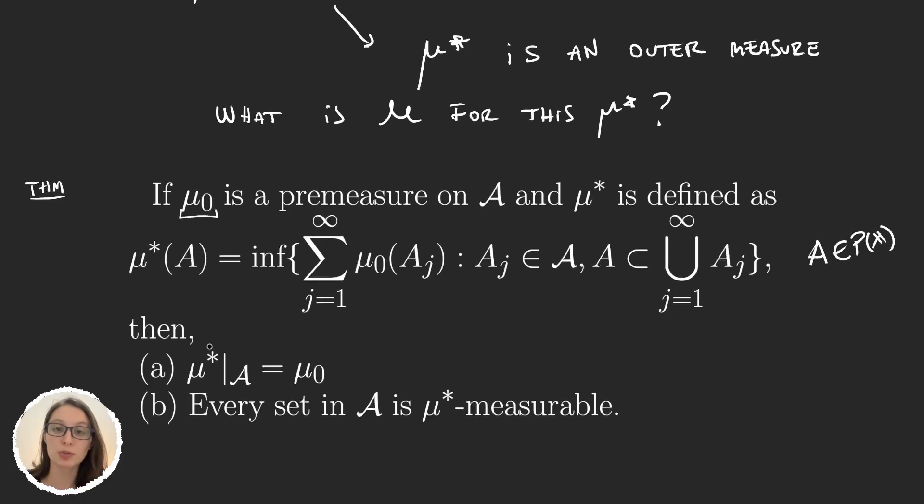First of all, the restriction of μ* to the algebra A is the same premeasure. Which makes sense because any object in the premeasure can be covered by itself. And so we would have here that that set alone would be the infimum. So you have to prove that but it's not so complicated.